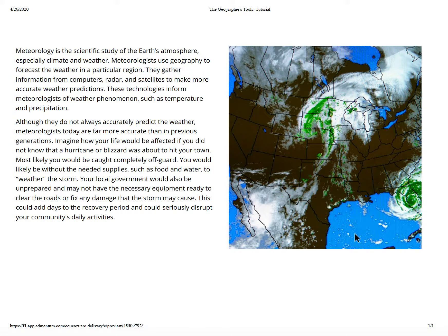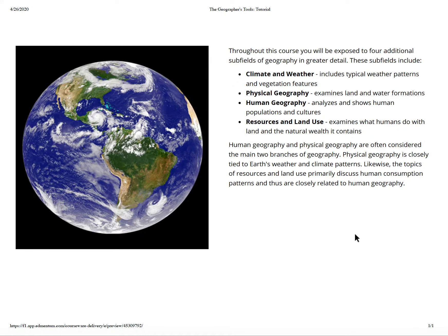Meteorologists today are far more accurate than previous generations. Imagine how your life would be affected if you did not know if a hurricane or a blizzard was about to hit your town. Most likely, you would be caught completely off guard. This summer I did not check the weather — a severe storm was coming in, and a tornado ripped through my town and I was almost caught in it. You would likely be without necessary supplies such as food and water to weather a storm, your local government would be unprepared, and many may not have the necessary equipment ready to clear the roads and fix any damage the storm might cause.